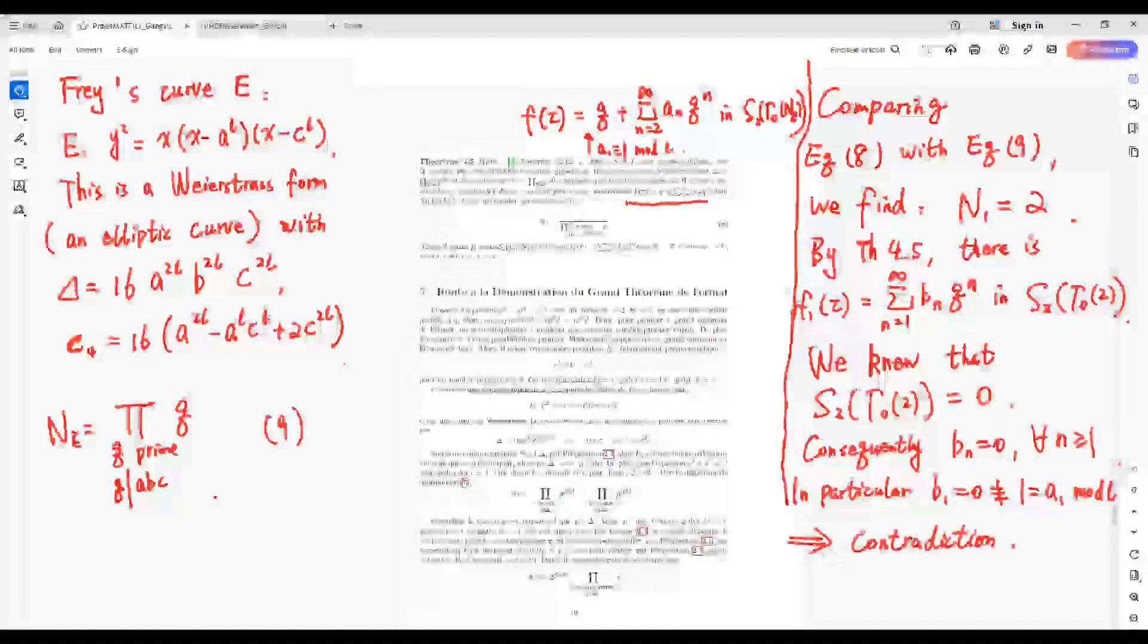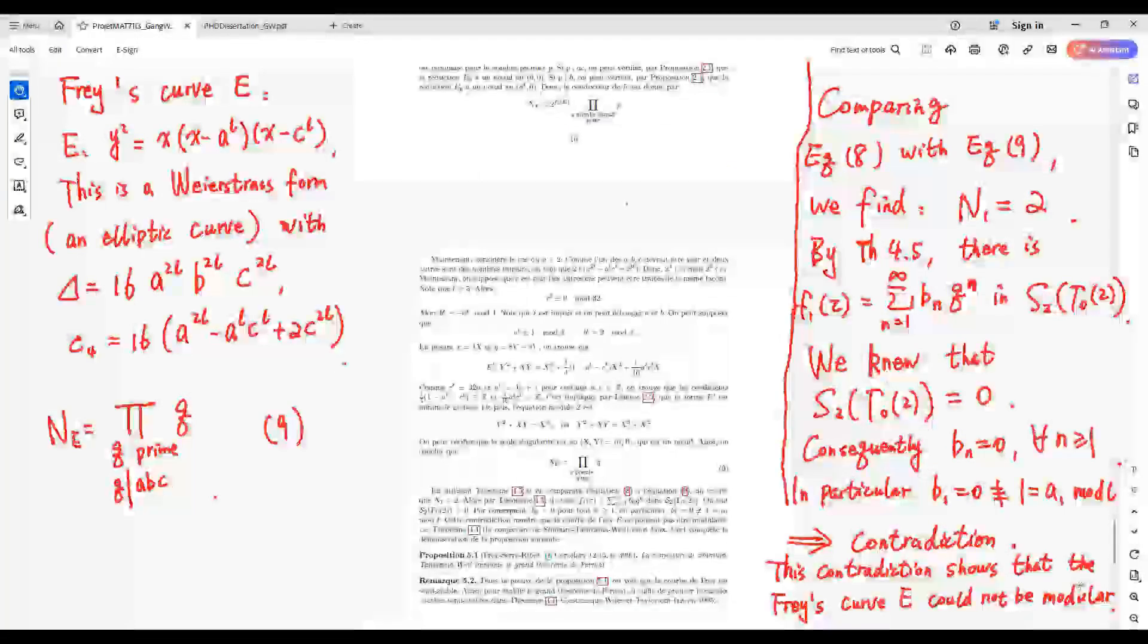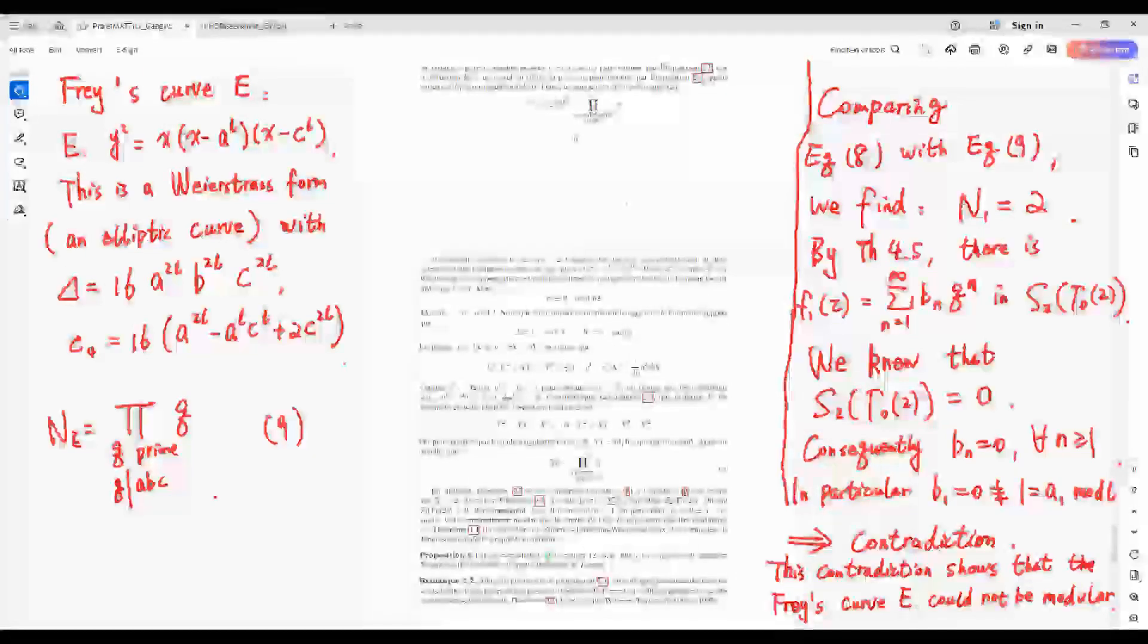Here, this is a contradiction. This contradiction shows the Frey curve E could not be modular.